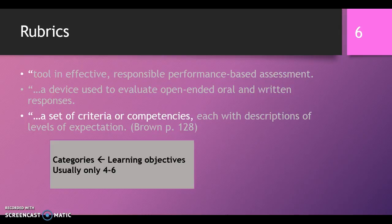Okay, back to the quote. So Brown also says that rubrics have a set of criteria or competencies. And these categories in our rubrics should come directly from the learning objectives. If, for instance, appropriate vocabulary use is a learning objective, if that's somehow in a well-written learning objective, that should probably show up somewhere in your rubric as well. And so these categories come from the learning objectives. And usually, we're not going to want a lot of these categories in our rubrics, maybe somewhere between four and six.